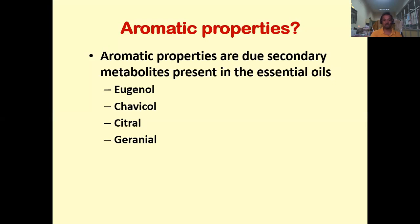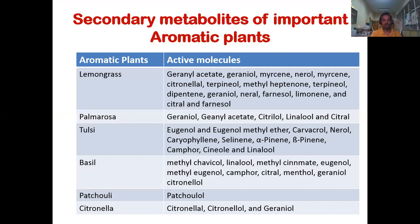Similarly, aromatic properties in plants are due to secondary metabolites present especially in essential oils. Lemongrass contains aromatic molecules like geranyl acetate, geranial, myrcene, nerol, citral and citronellol. Palmarosa contains geraniol, geranyl acetate, citral and linalool. Tulsi contains eugenol, eugenol methyl ether, chavicol and nerol. Basil contains methyl chavicol, linalool, methyl cinnamate and eugenol. Patchouli contains patchoulol, citronellol and geraniol.